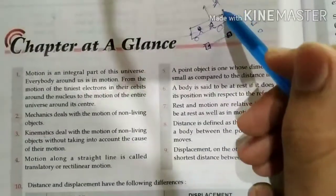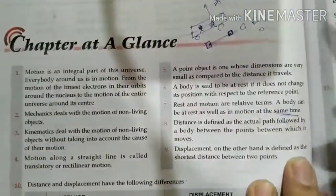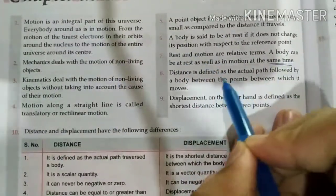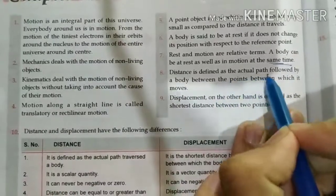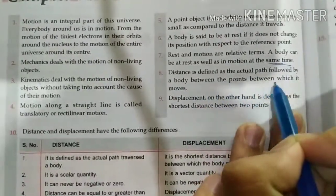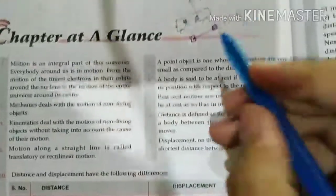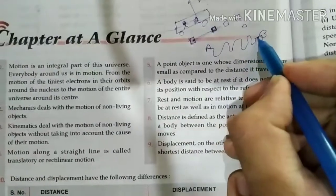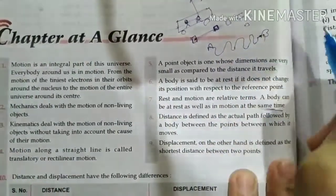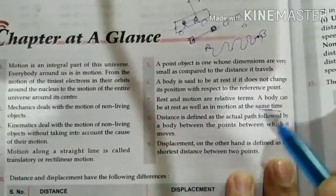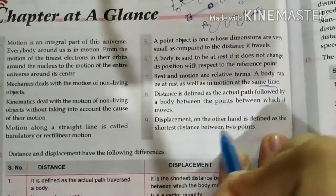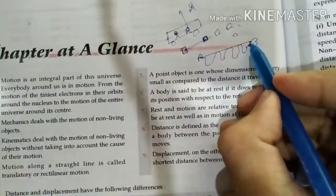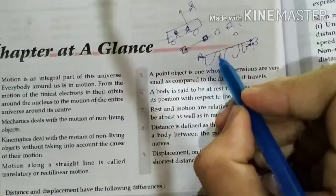Distance is defined as the actual path followed by body between the two points between which its move. If a move from A to B, the distance has covered the path, that is the distance. Displacement on the other hand is defined as the shortest distance between the two points. If you have a body directly into the point, then you will have displacement.